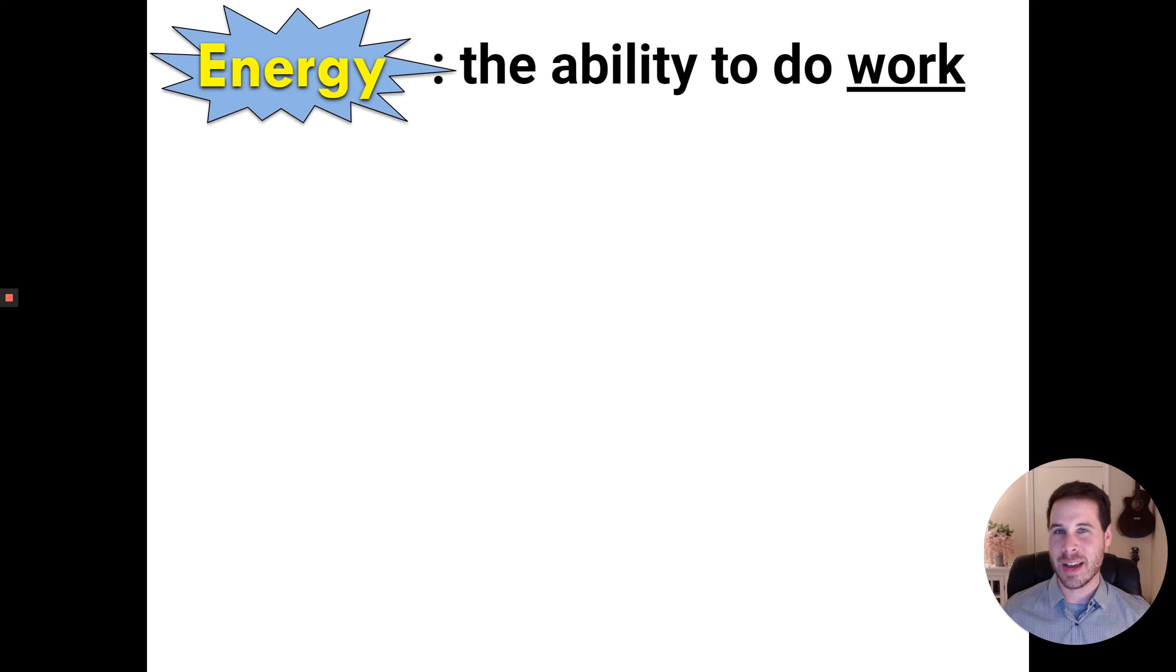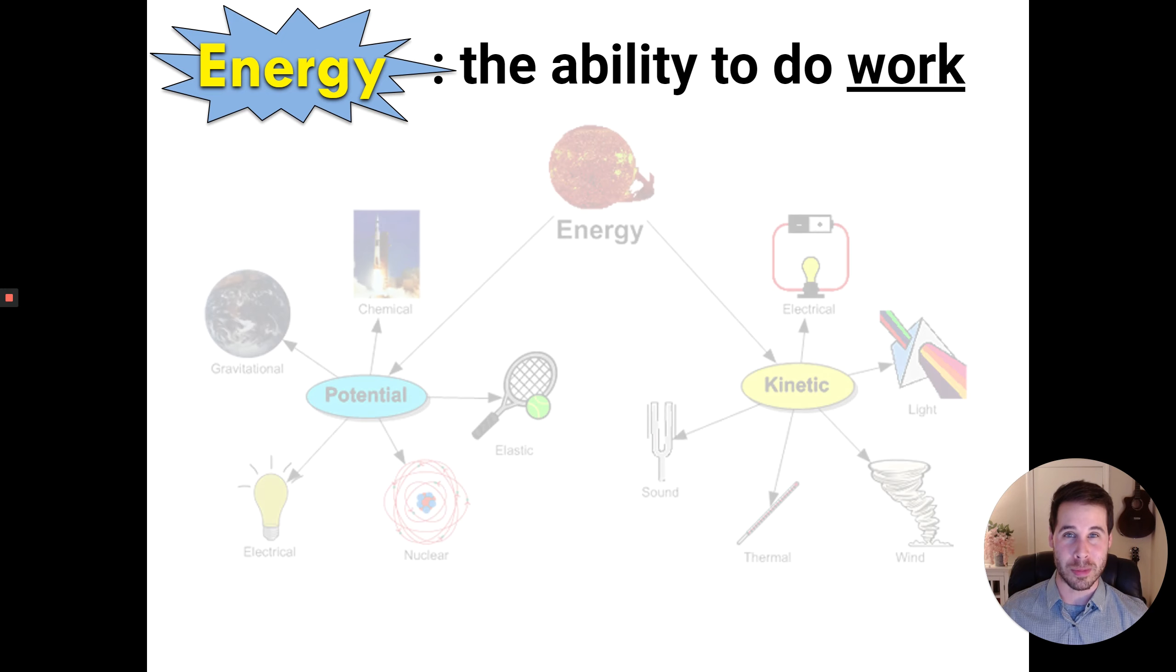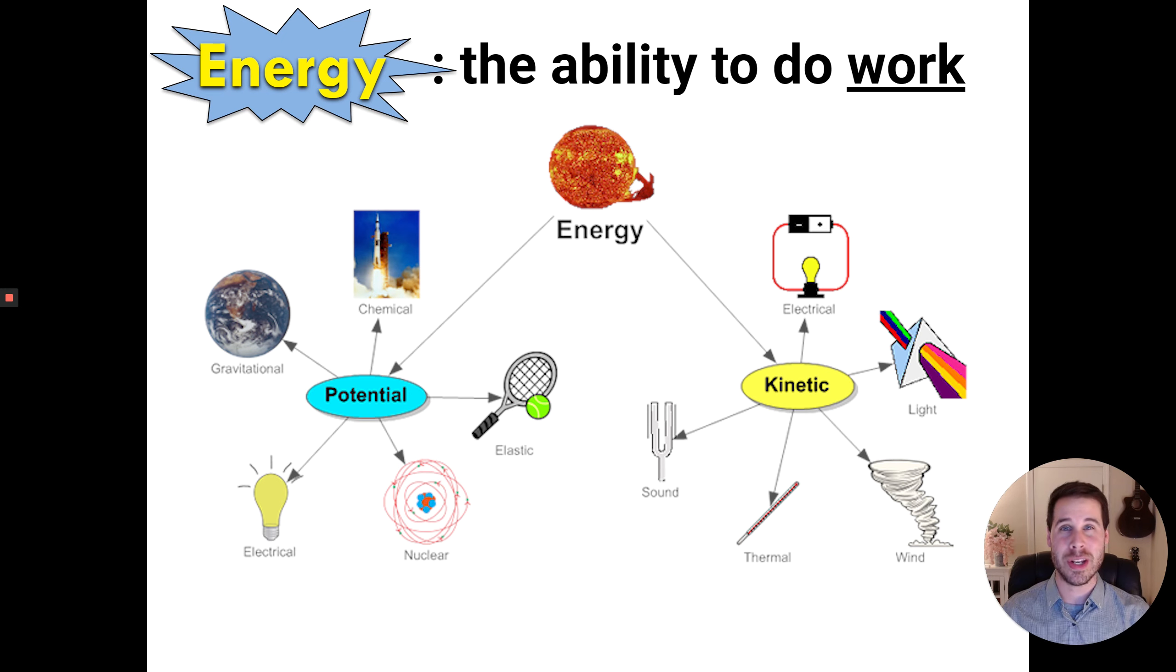So here's the definition for energy. Energy is officially defined by scientists as the ability to do work. Now that's probably a pretty disappointing definition. It's not very juicy or satisfying, and that's because energy is really hard to define because it exists in so many different forms. There's solar energy and thermal energy and light energy and all kinds of other types of energies that all look and feel very different. So we have to do this kind of abstract definition to cover all those bases.